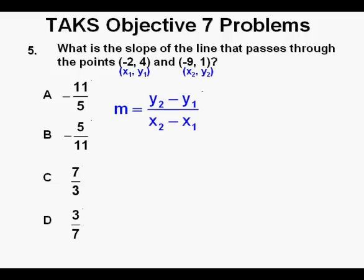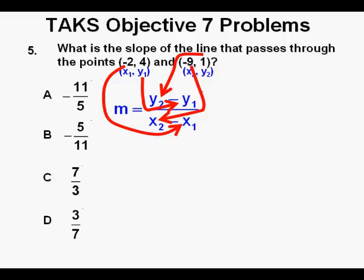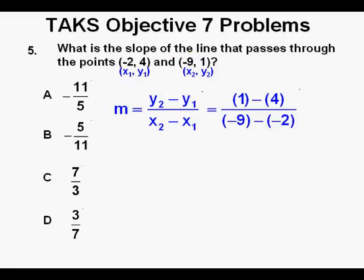We'll let the first point be x1 comma y1 and the second point be x2 comma y2. And here's where the numbers go in the formula. And this is it with all the coordinates in place in the slope formula. And that's 1 minus 4 over negative 9 minus negative 2.